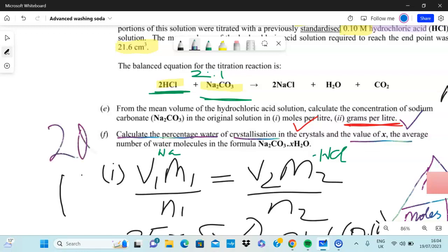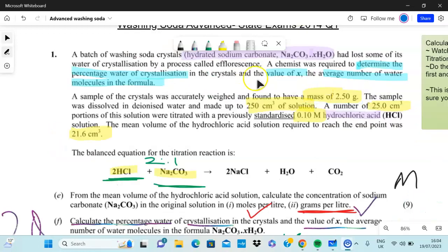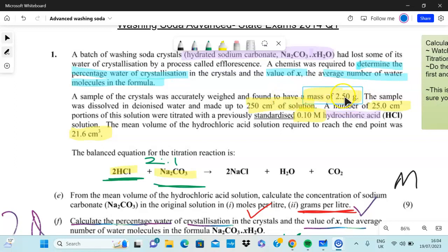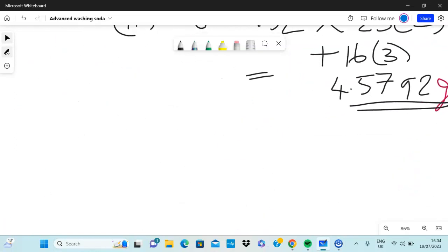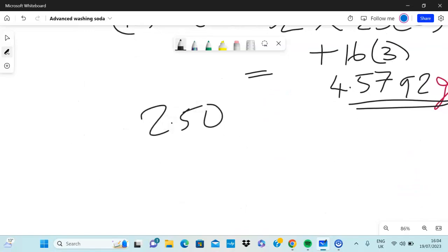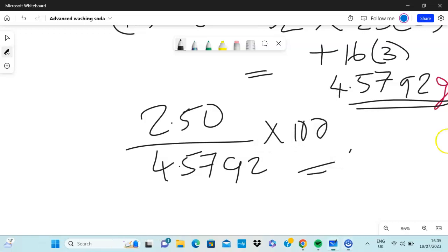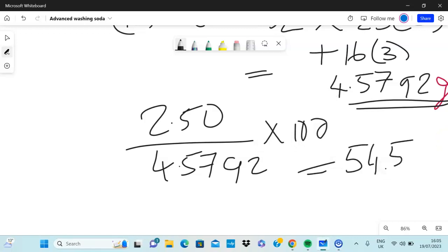Next question is calculate the percentage of water crystallization and the value of X. There's two questions in this one, so make sure you answer both of them. Let's find the percentage. Percentage is your small number over the whole number. It's always small divided by larger number multiplied by 100. We know the mass of crystals is 2.50, so if I write that down here, that would give me 54.59.